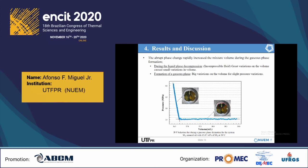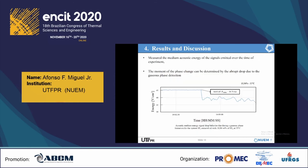The abrupt phase change rapidly increased the mixture volume during the gaseous phase formation. Before the phase change, during the liquid phase decompression, great variations in the pressure of the mixture caused small variations in the volume, due to the presence of two incompressible fluids inside the cell. After formation of a gaseous phase, big variations in the volume started to cause slight variations in the pressure. This discontinuity of the curve could be used to identify the bubble pressure of the mixture. Acoustically, measuring the medium acoustic energy of the signals emitted over the time of the experiment, the moment of the phase change could be determined by its significant drop due to the gaseous phase detection.